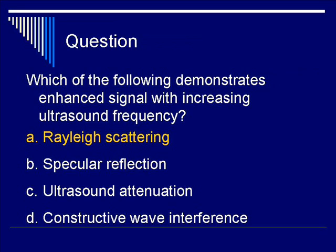The correct answer is A. Rayleigh scattering is the one mechanism in which you see an enhanced echo signal with increased ultrasound frequency. Since Rayleigh scattering is an acoustic scattering phenomenon, it describes reflection from small objects that have dimensions much smaller than the wavelength of the ultrasound source.